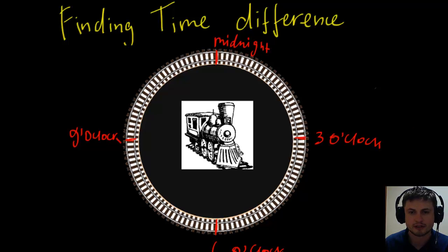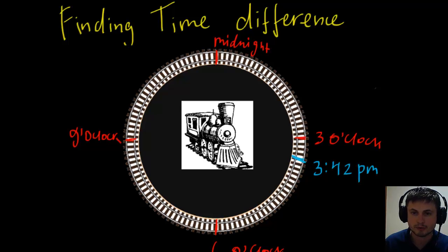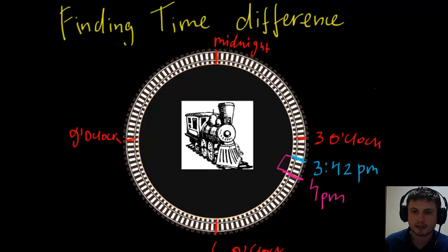This train stops at every station every hour. Starting with 3:42 PM — which is right here — that's where we start. The first stop is going to be at 4 PM, right here. So you have to find the difference between these two points in minutes: 60 minutes minus 42 minutes gives us 18 minutes.